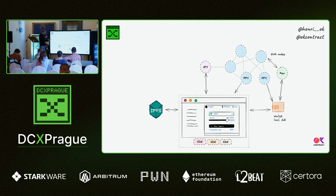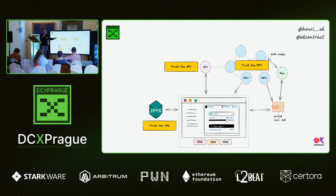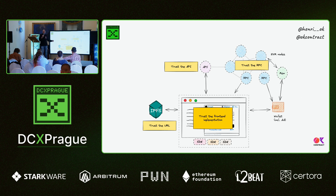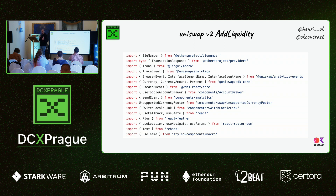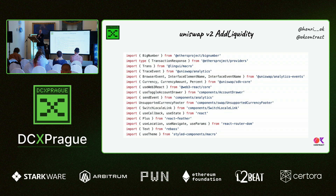If we look at a simplified architecture, we have our build artifacts, multiple SDKs embedded in those artifacts, creating an interface which connects to RPC, API, etc. We should trust the URL or the ENS when properly decentralized, we should trust the API — and we've seen that most often it's centralized — and we should trust the RPC node. One big thing we need to also trust is the frontend implementation itself. For instance, one single page of Uniswap's add-liquidity feature is 500 lines of JavaScript code, not counting lots of different libraries, SDK components, hooks, etc.